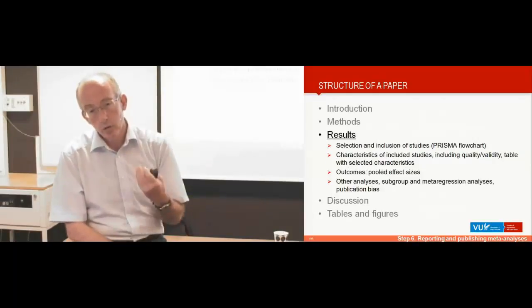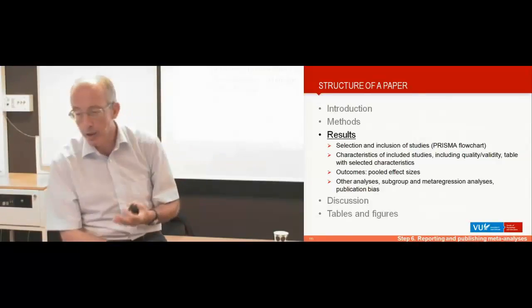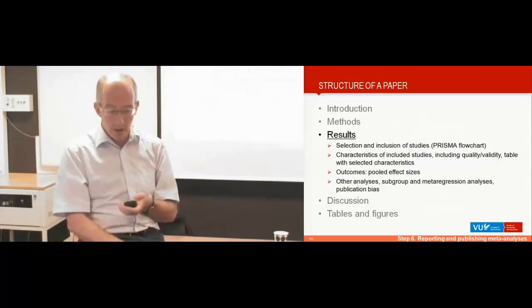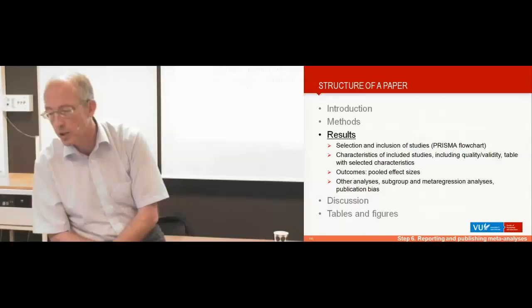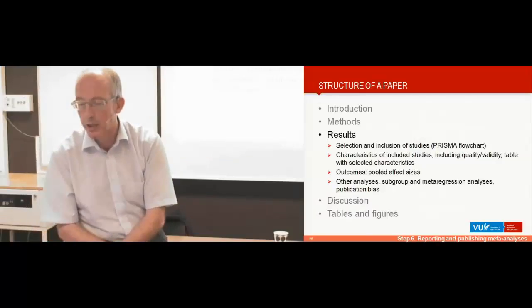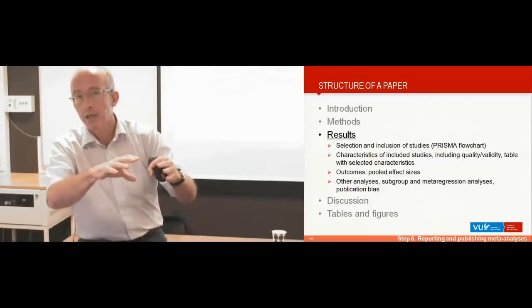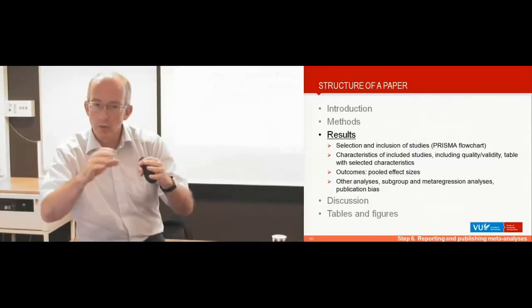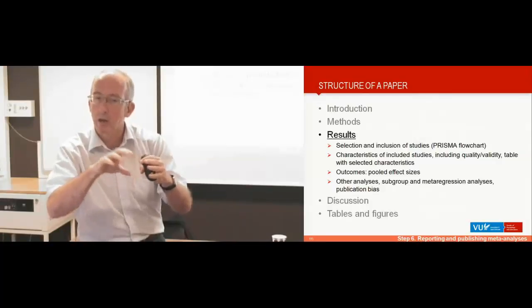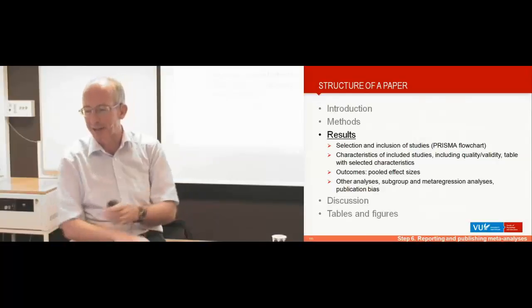So if you report the results, you should first describe how you selected and included your study. It's according to the PRISMA flowchart. I will show later how this looks like with the tables and figures. But you have to describe how many hits you had for each database, how many were removed after removing of the duplicates, how many full-text papers, how many met inclusion criteria, etc.